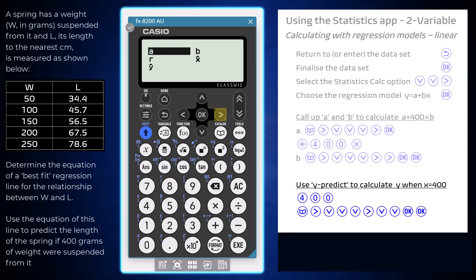As we can see here, we have options of y-predict and also x-predict, which predicts x for a given y. Use the arrows and OK to choose y-hat and then press OK again to complete the calculation, confirming the results seen previously.